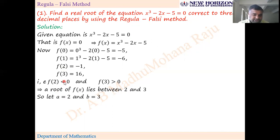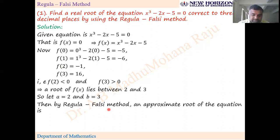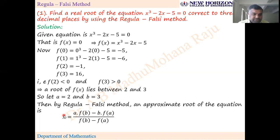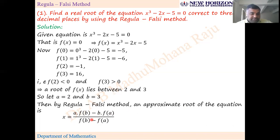Where the function is negative, always take it as a; where it is positive, always take it as b. Then by Regula-Falsi method, the approximate root formula is x = [a·f(b) − b·f(a)] / [f(b) − f(a)]. Substitute the values of a, b, f(a), and f(b) into this formula and calculate x.